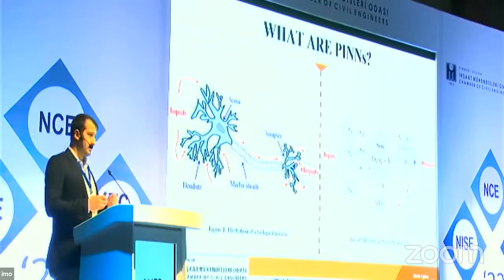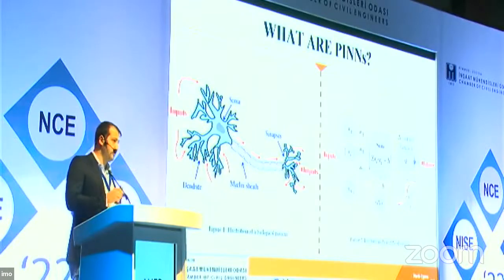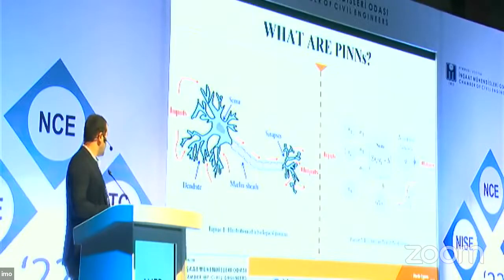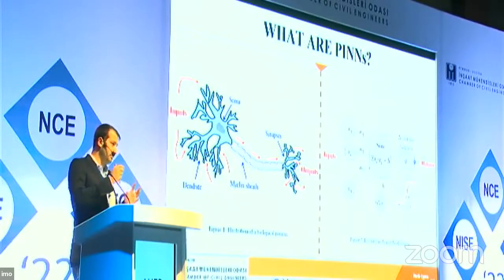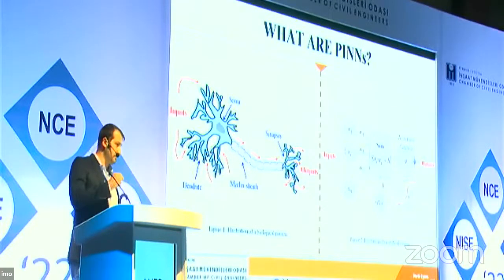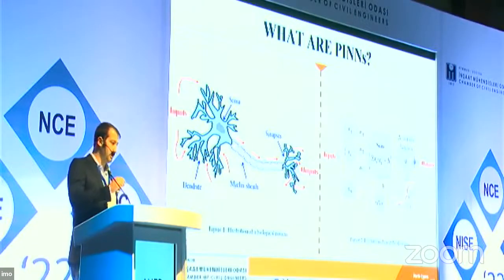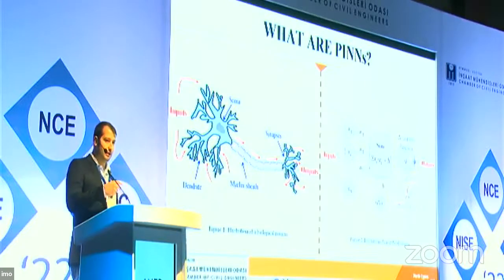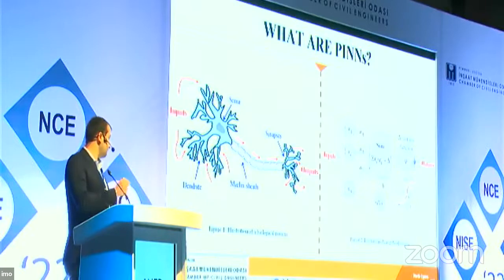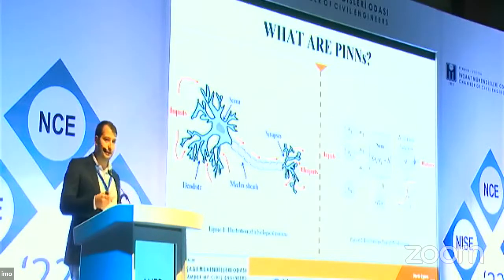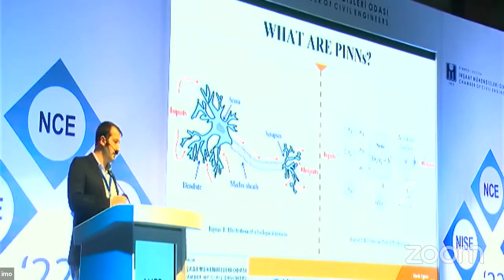Neural networks mimic human biological neurons in the brain. Similar to the biological brain, which has a cell with input sensing and output response, a neural network has a mathematical representation of each part. The main cell is represented by the summation of the weighted inputs plus a bias parameter, and an activation function transforms mathematically invalid values into physically meaningful ones.